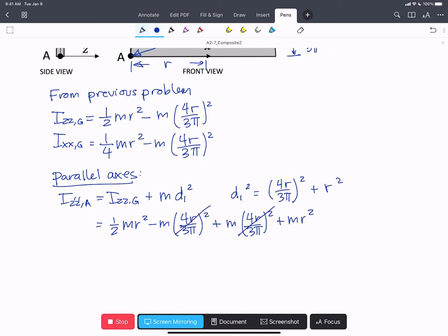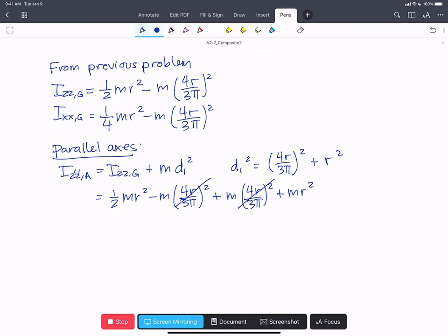These two cancel and we find we have a total of 3/2 m r². If we put in the numbers 3/2 times 0.4 kilograms times 0.1 meters all squared,